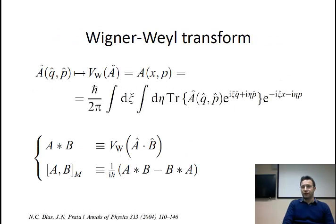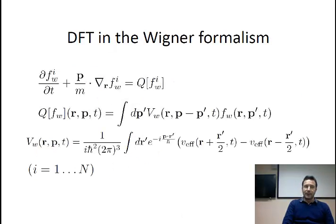Starting from the single-body Schrödinger equations coming from the Kohn-Sham system, you may apply the Wigner-Weyl transform to every single Schrödinger equation in the system. If you do so, you end up with a system of coupled equations which are not Schrödinger equations anymore, but the corresponding Wigner equations. So we started from the Kohn-Sham system of Schrödinger equations and, by applying the Wigner-Weyl transform, we arrived at a system of coupled single-body Wigner equations, which is the system shown in this slide.